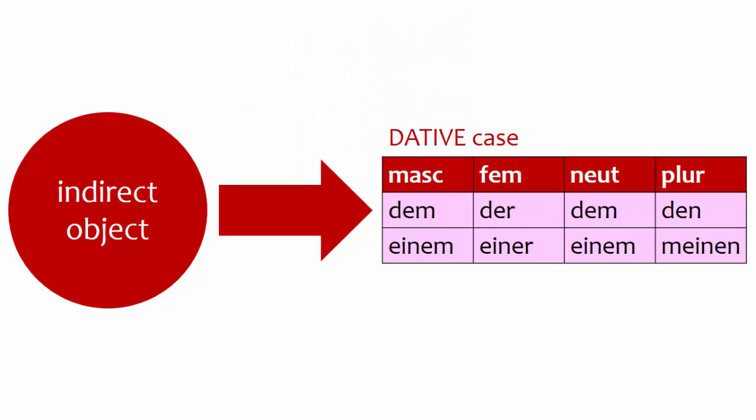Indirect objects go into the dative case, whose article endings are listed here. Remember that some articles take the same endings as der, die, and das, while others take the same endings as ein and eine. If you need a refresher on which words take which endings, just do a quick search for der words and ein words.